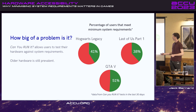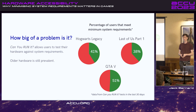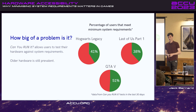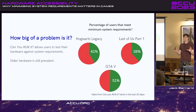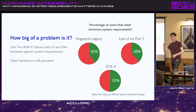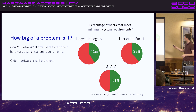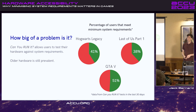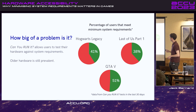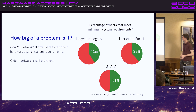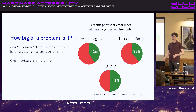So how big of a problem is it? I've got some data from a site called Can You Run It, which allows users to test their hardware against game requirements listed on the Steam page. Developers give out minimum and recommended system requirements. For the latest games — Hogwarts Legacy and Last of Us Part 1 — about 40% of people testing their computers are meeting those minimum requirements. And GTA 5, almost a decade old, only 50% of people testing it are still meeting those requirements. It shows older hardware is still quite prevalent.